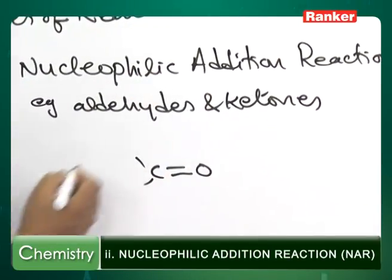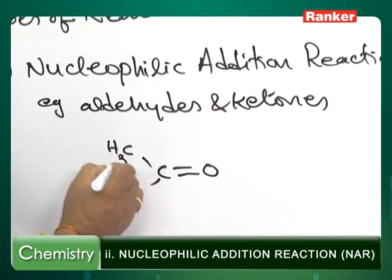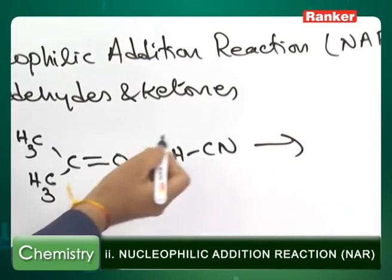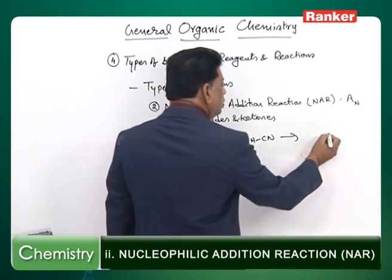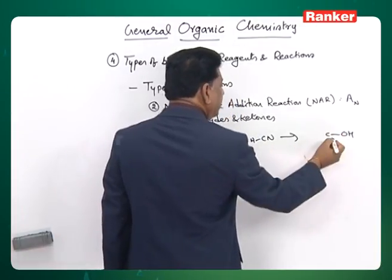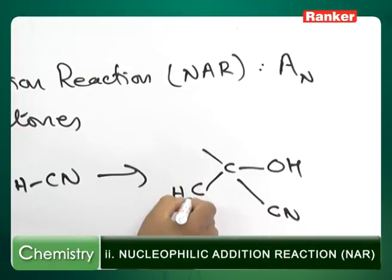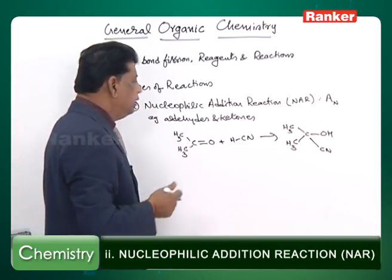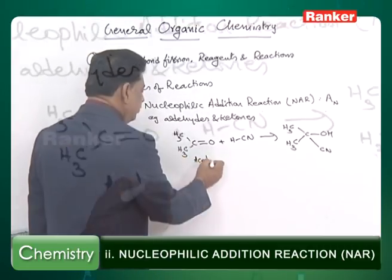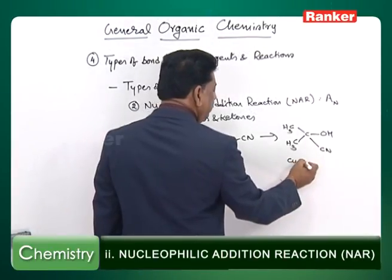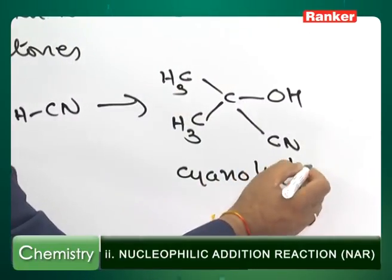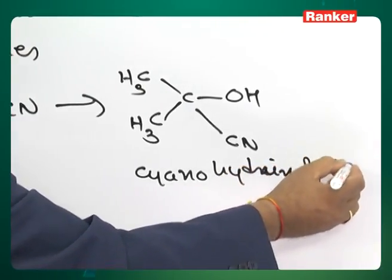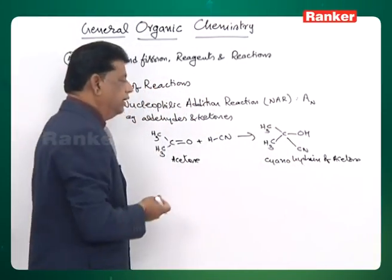For example, if you take acetone and add HCN — H on one side and cyanide on the other — the H goes to the O, so O becomes OH, and the entire cyanide is added to the carbon. The product formed is called cyanohydrin. This product is called the cyanohydrin of acetone.